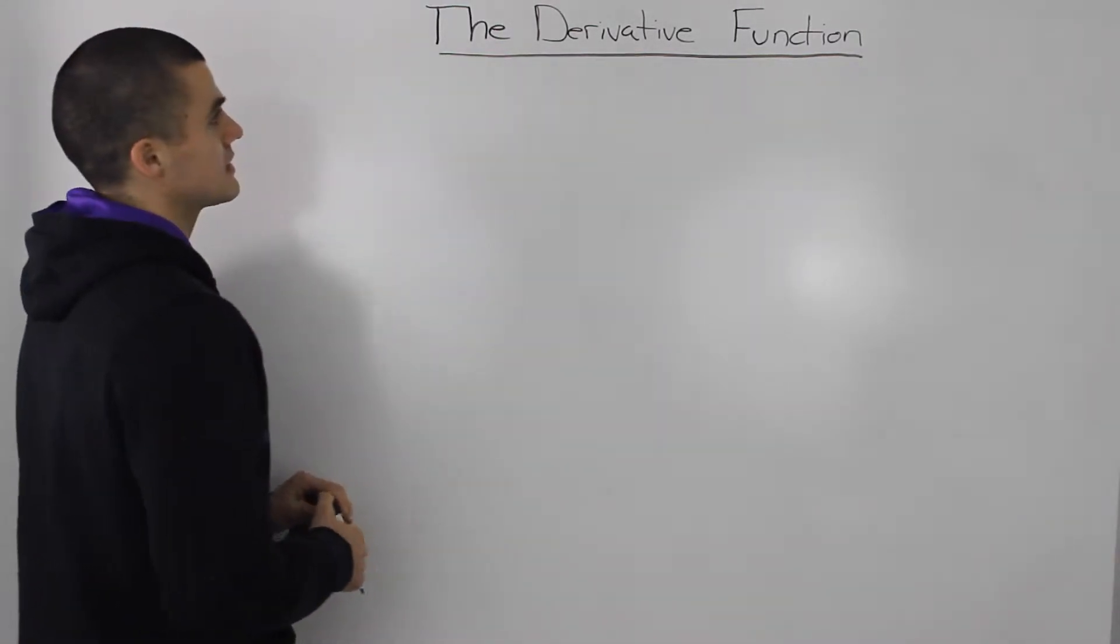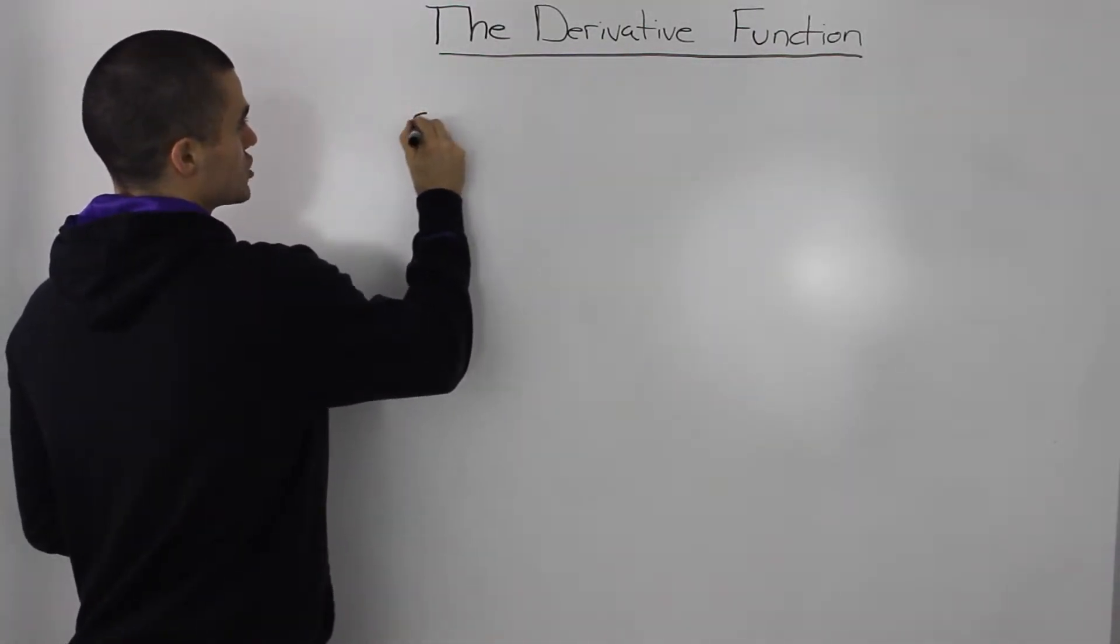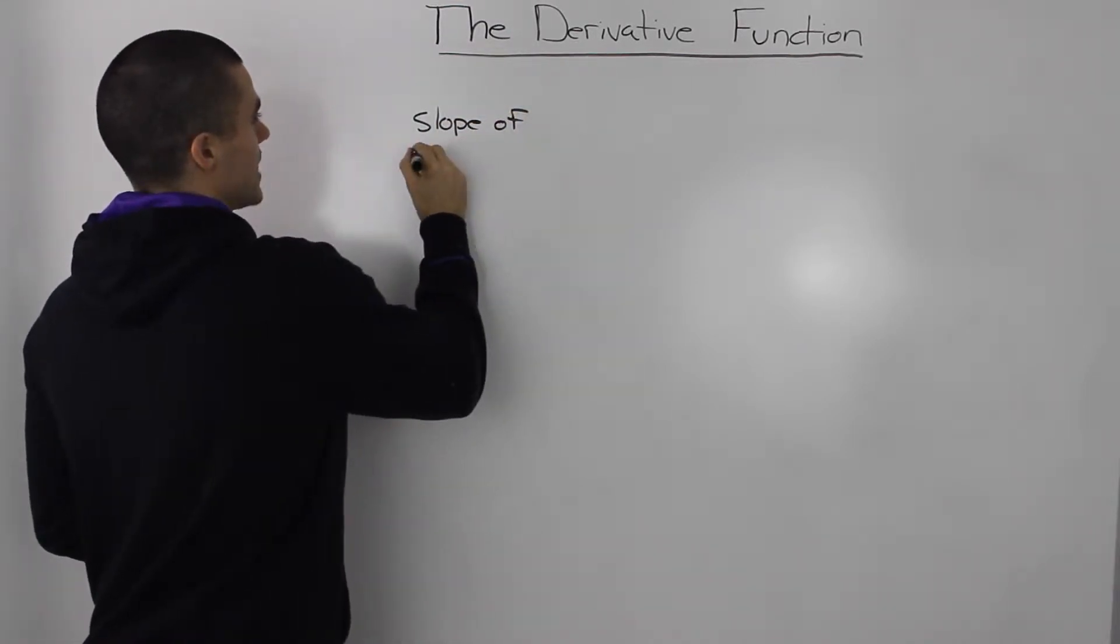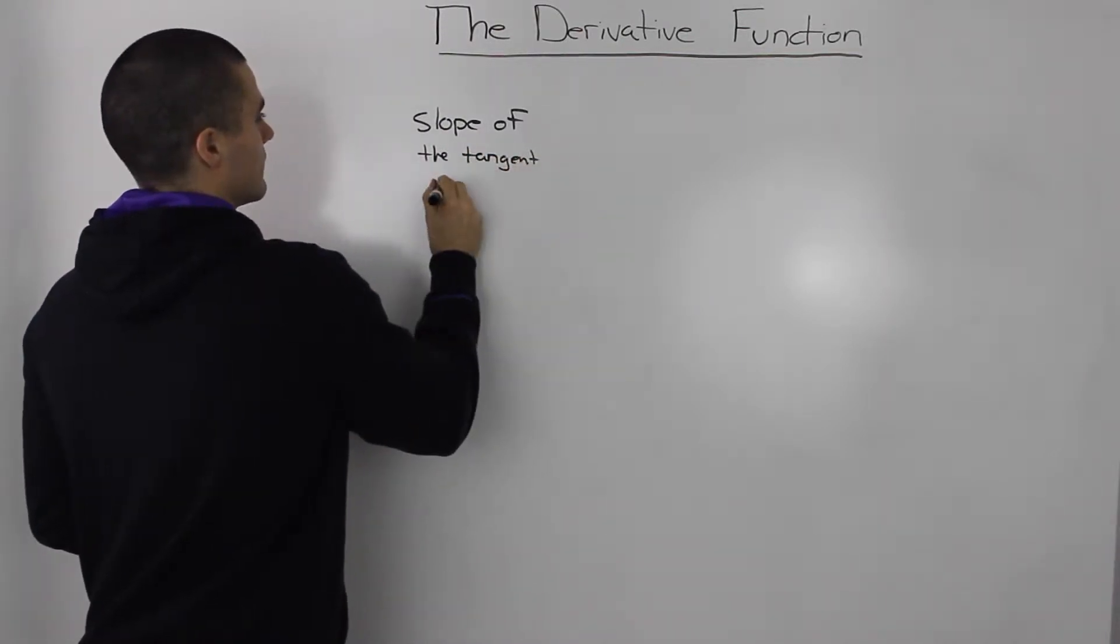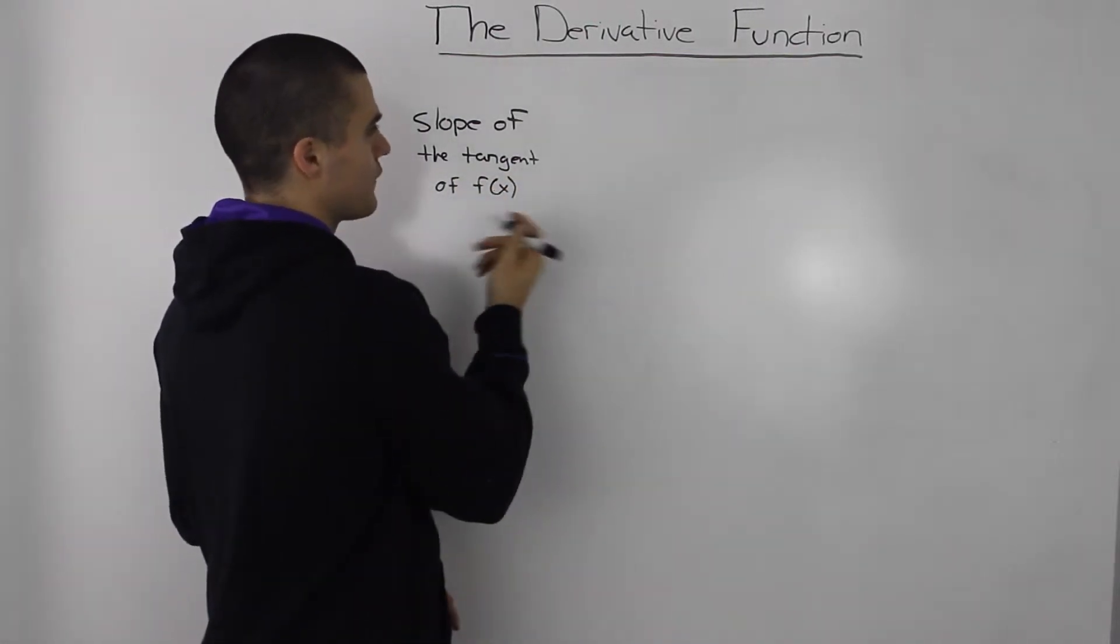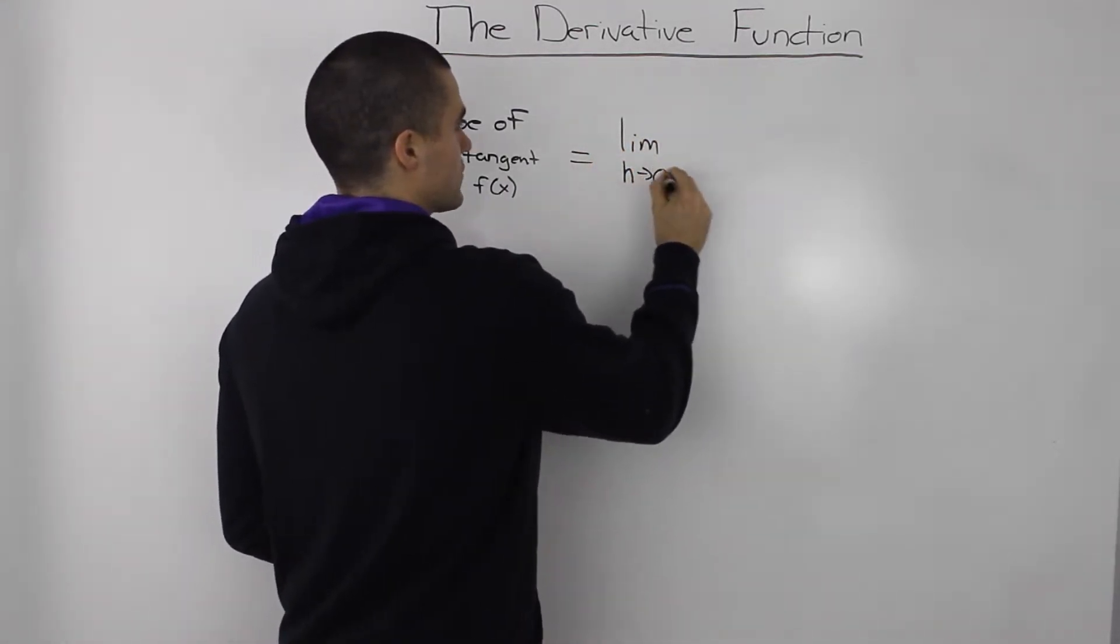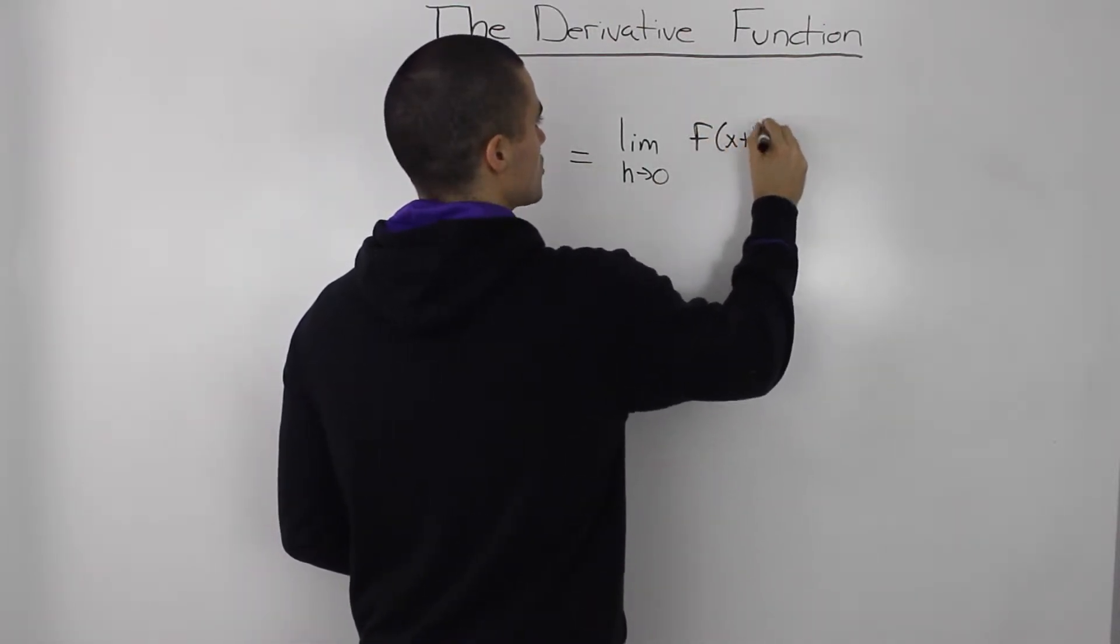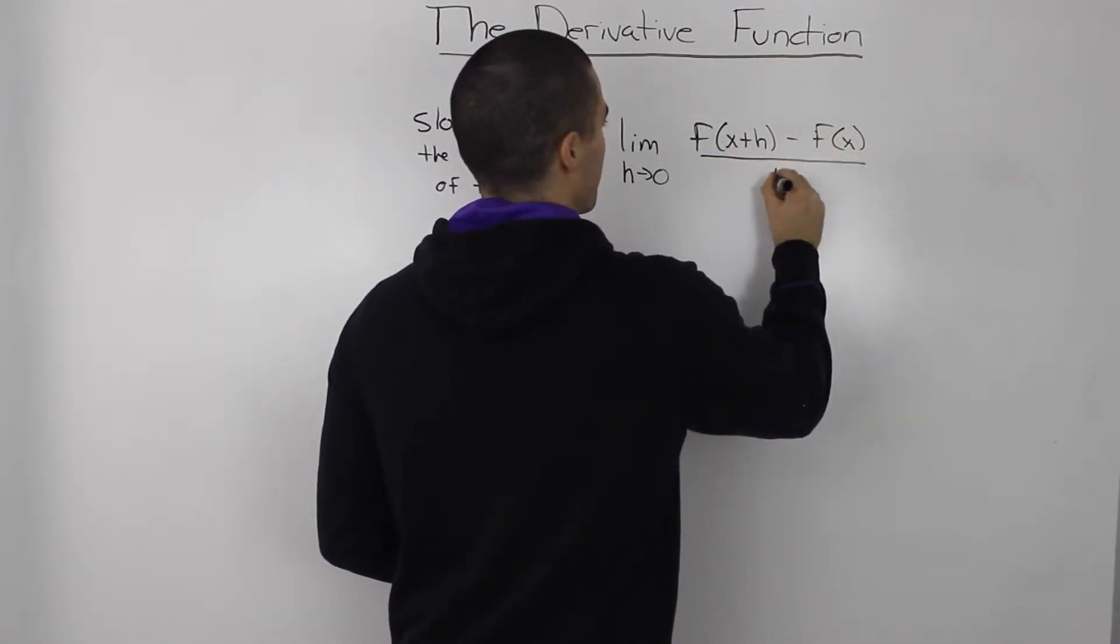So let's do a little brief review here. So before, we mentioned that the slope of the tangent of f of x, some function f of x, is equal to the limit as h approaches zero of f of x plus h minus f of x all over h.